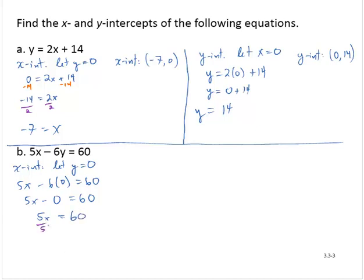Dividing through both sides of the equation by 5 to isolate the variable, I find that x is equal to 12. So the x-intercept is 12, 0.